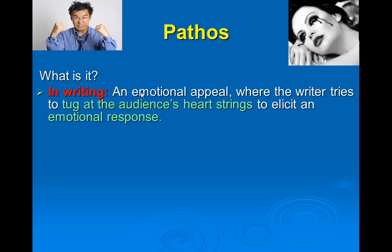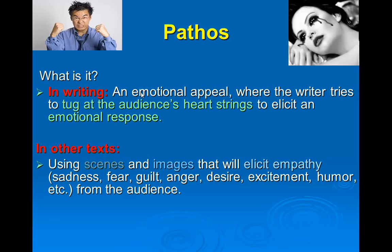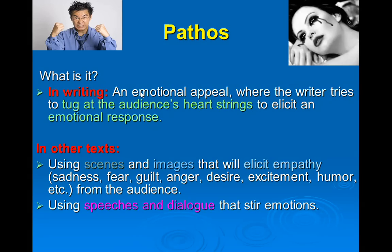Pathos is an emotional appeal — in writing, the writer tries to tug at your heartstrings. In other texts, it's about using scenes, images, or lyrics that make you feel something. Often it's empathy — being able to relate to what's happening to the characters or what the singer is singing about. The most common emotional reactions include sadness, fear, guilt, anger, desire, excitement, and humor. Humor is also pathos. Speeches and dialogue, music, and images can all stir emotions.